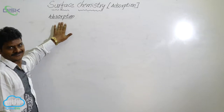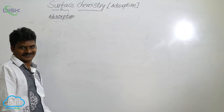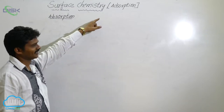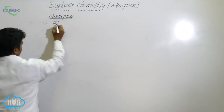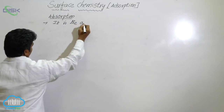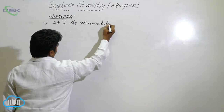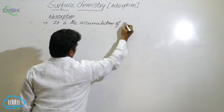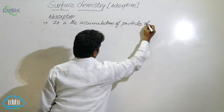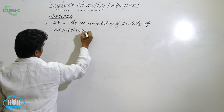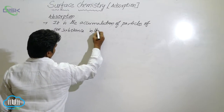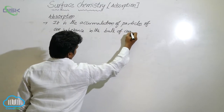Let us see another term — absorption. We frequently use the word absorption, but we rarely use the word adsorption. See the spelling: adsorption is A-D, absorption is A-B. Both are not the same. The definition for absorption is the accumulation of particles of one substance in the bulk of another substance.